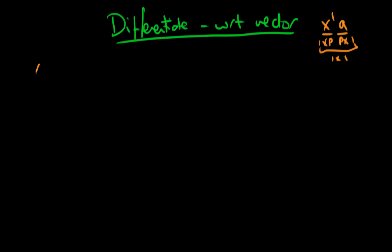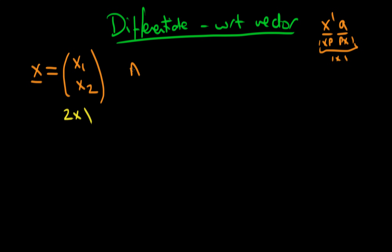Let's define the things we're talking about. x is a 2 by 1 column vector where its first entry is x1 and its second entry is x2. We're also going to define a symmetric matrix A which has components A11, A12 on the diagonal — both the same because it's symmetric — and a final component A22.